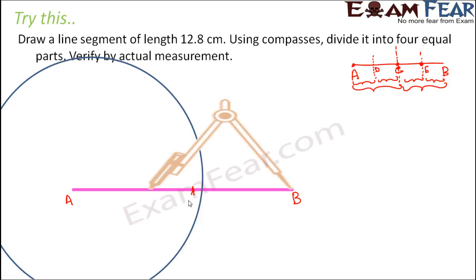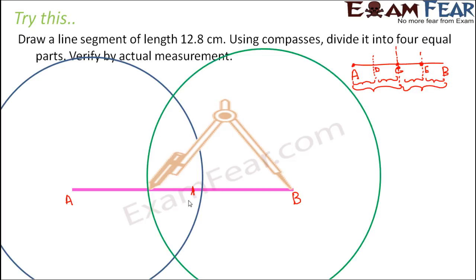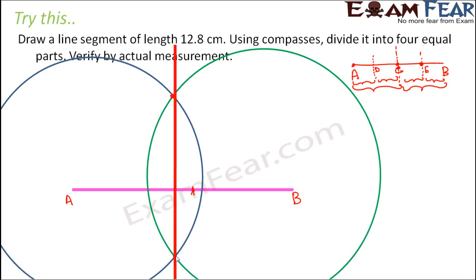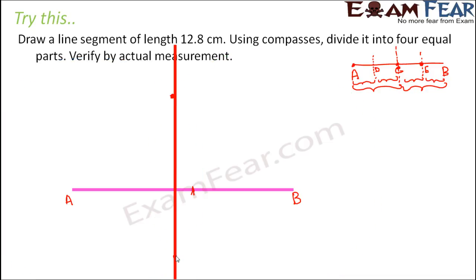Similarly, consider B as the center with radius slightly more than half the length of AB and draw another circle. These two circles intersect at two points. Join these two points and you see that this line passes through the center. So this intersection point is C, the midpoint of AB. Therefore, AC is equal to CB.